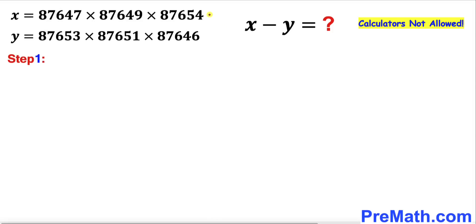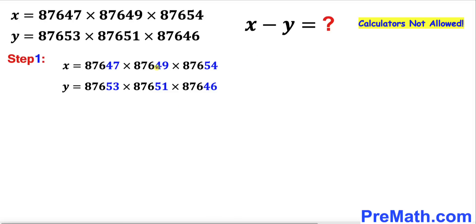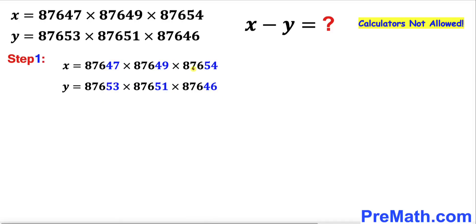Let's focus on the numbers x and y. Looking at them closely, these numbers are almost the same — the only difference is the last two digits across the board. If we add those last two digits, for example 47 and 53, and divide by 2, the average turns out to be 50. Likewise, the other pairs of last two digits also average to 50.